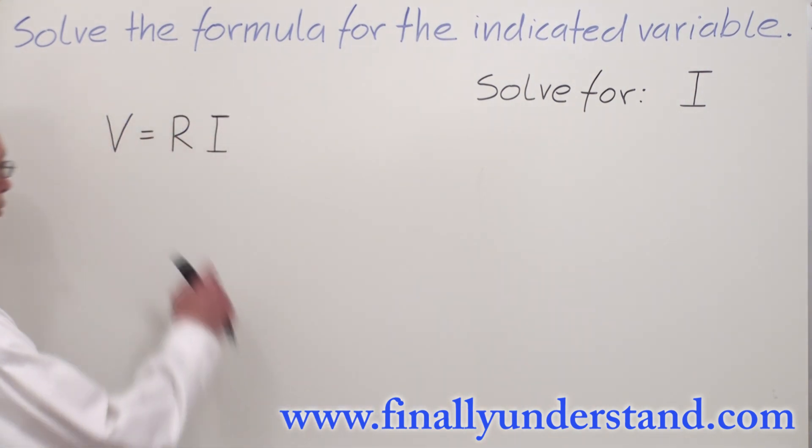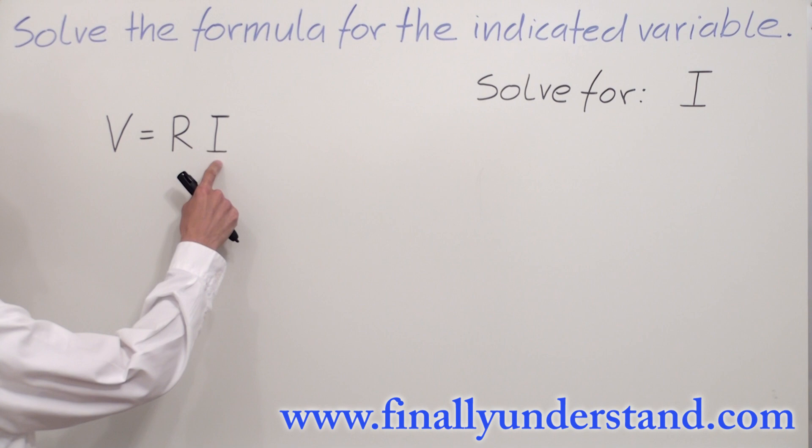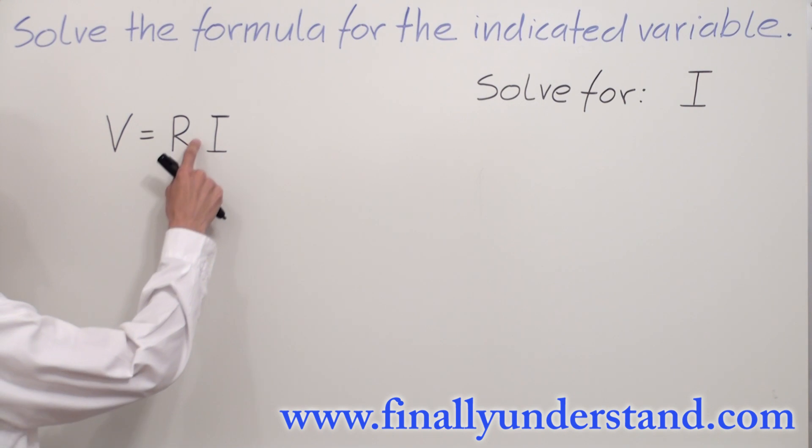I is on the right side of my formula, multiplied to R. We said that anytime we do not have any sign between two variables or two numbers, there is always an invisible multiplication sign.